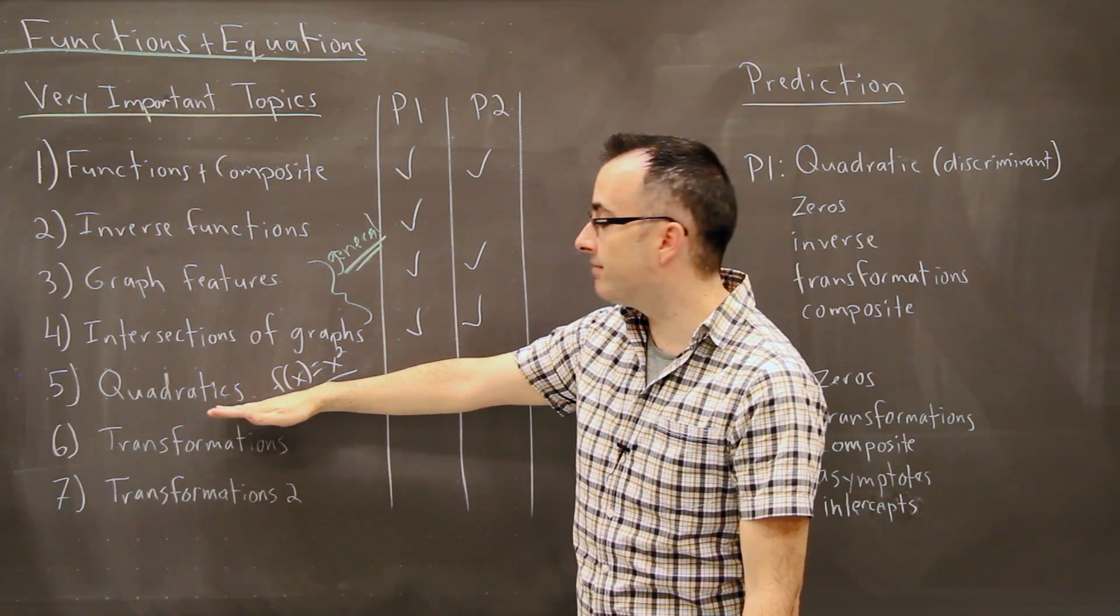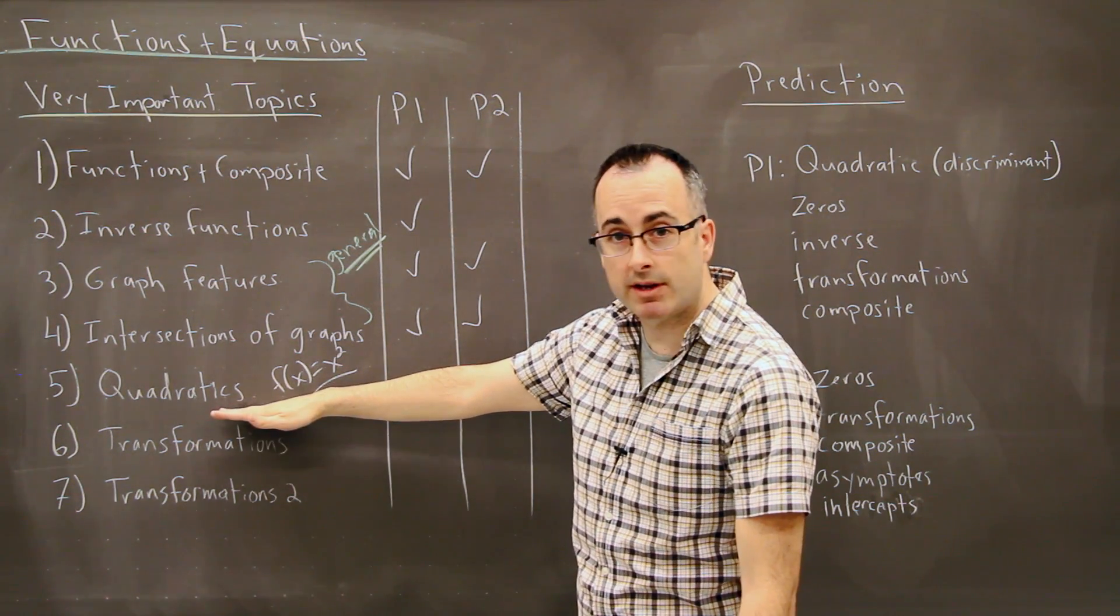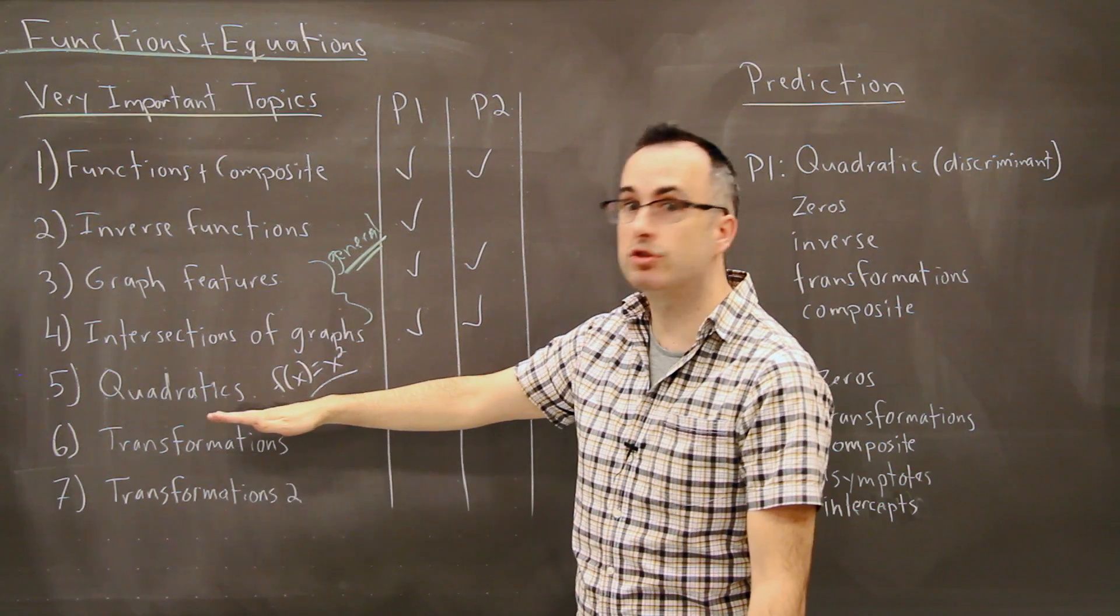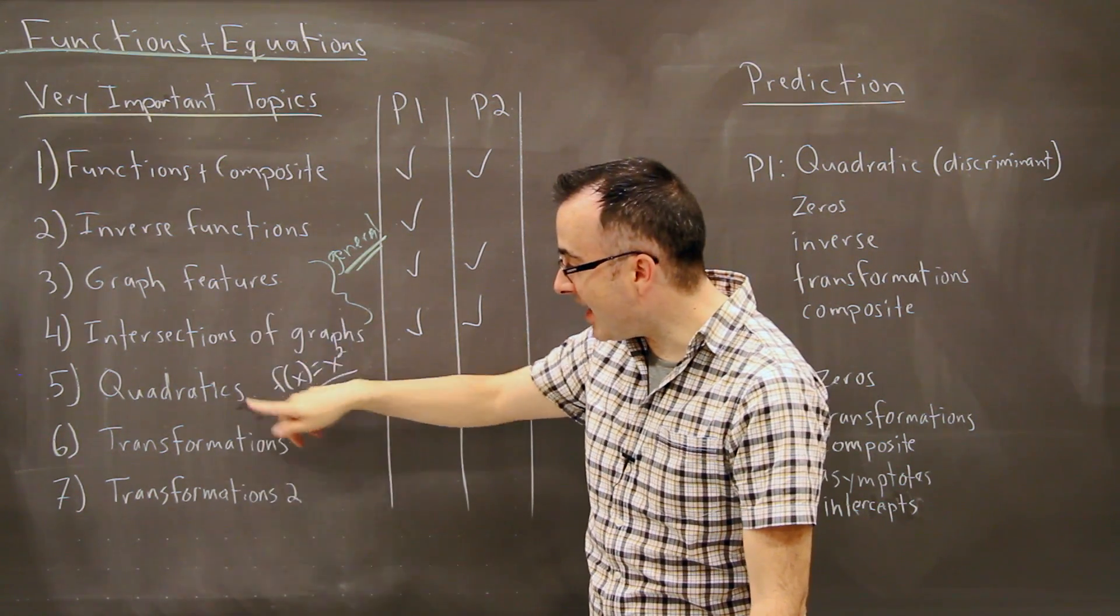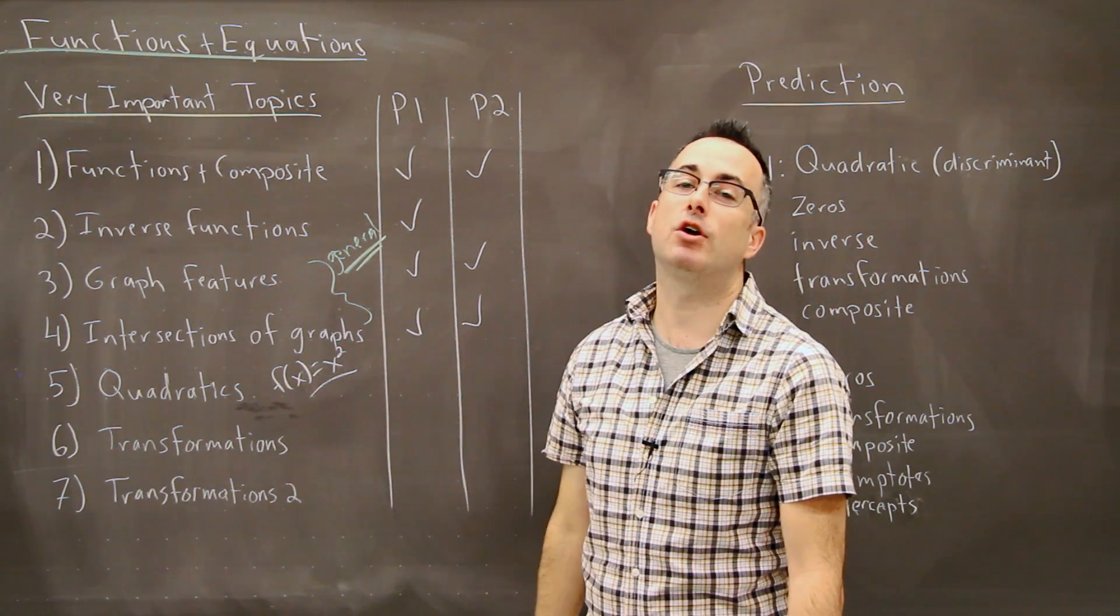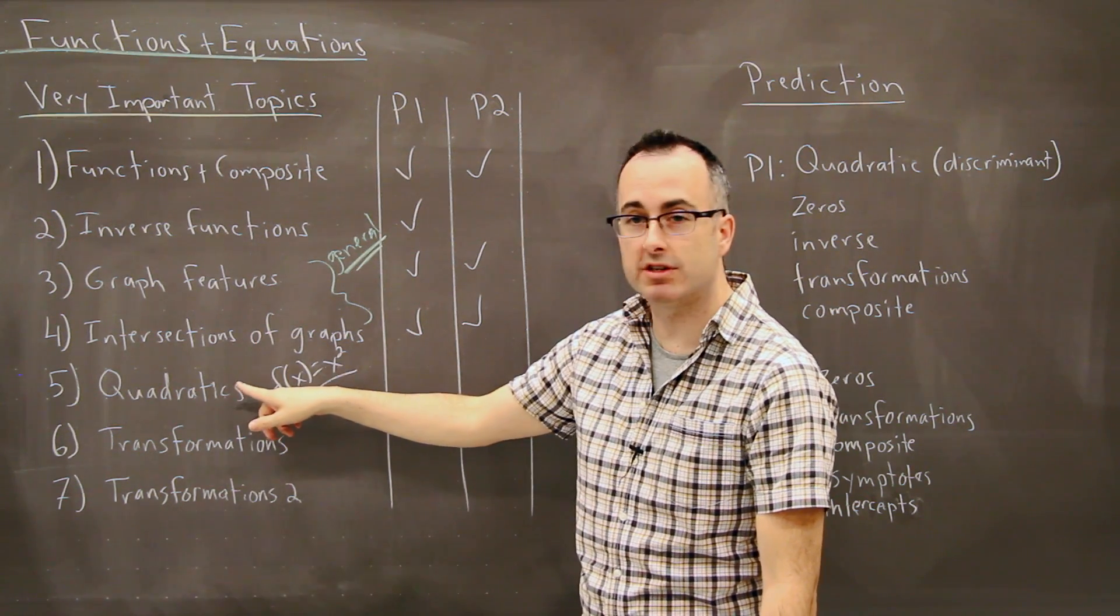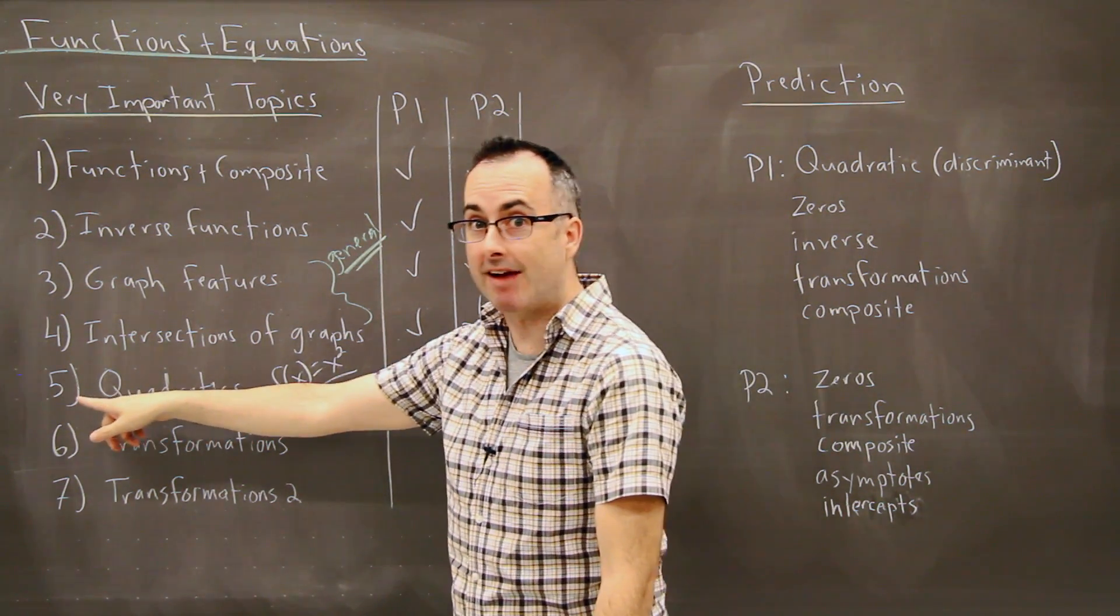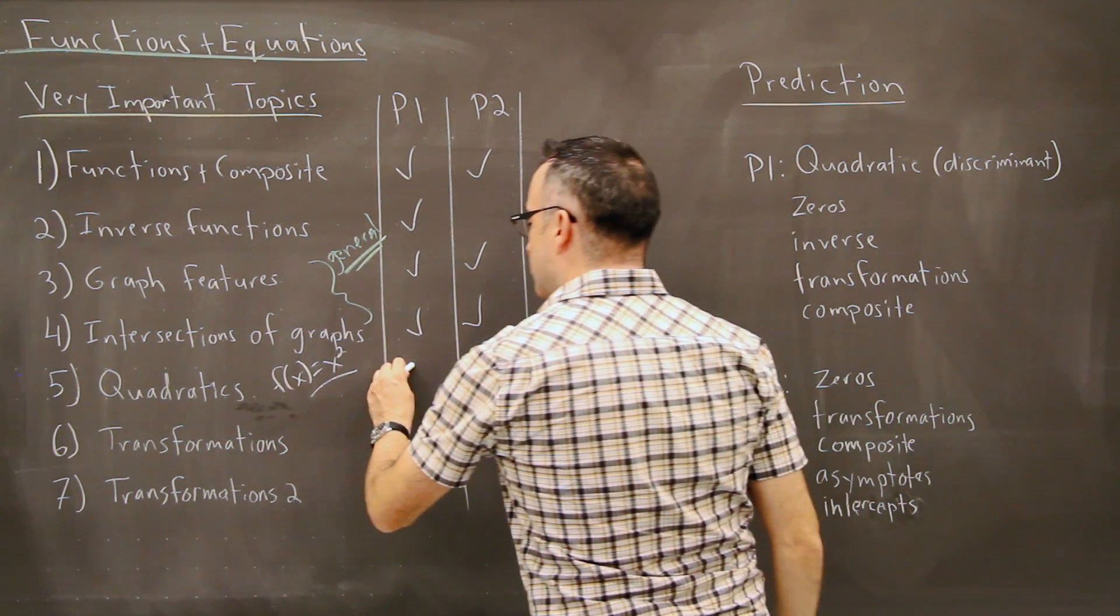There's a lot of ways of doing it, either by graphing, by factoring, you could complete the square, you could use a quadratic equation. And within that, really important, is something called discriminant. This tells you how many different solutions there are. This one shows up heavily weighted on this, and it's usually paper one.